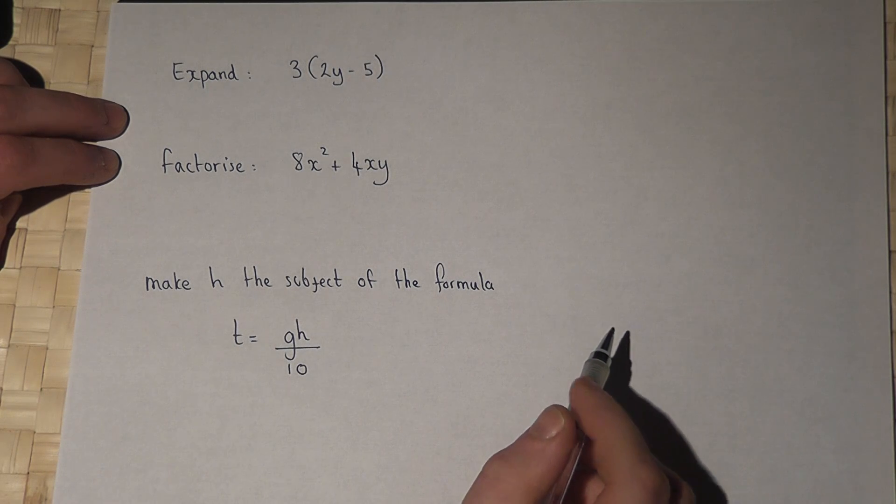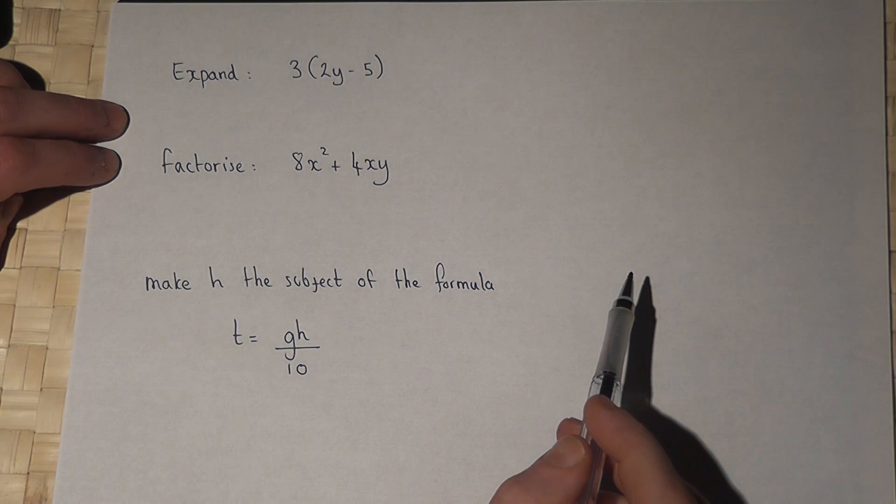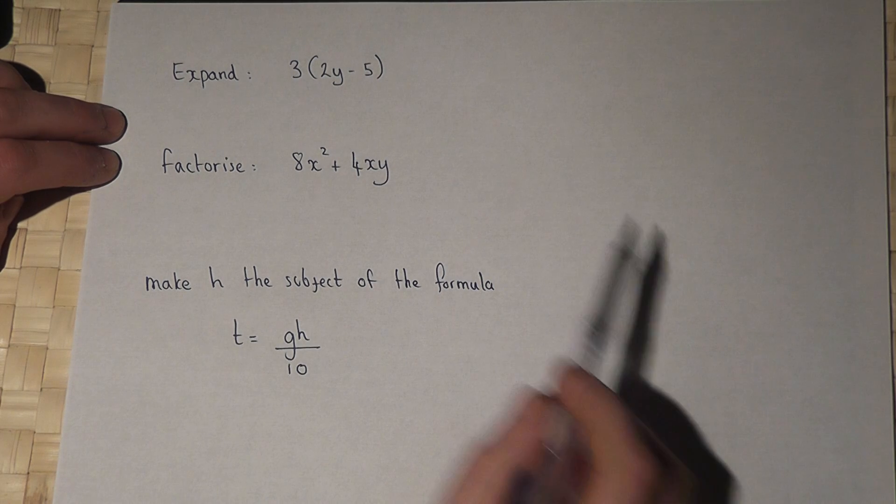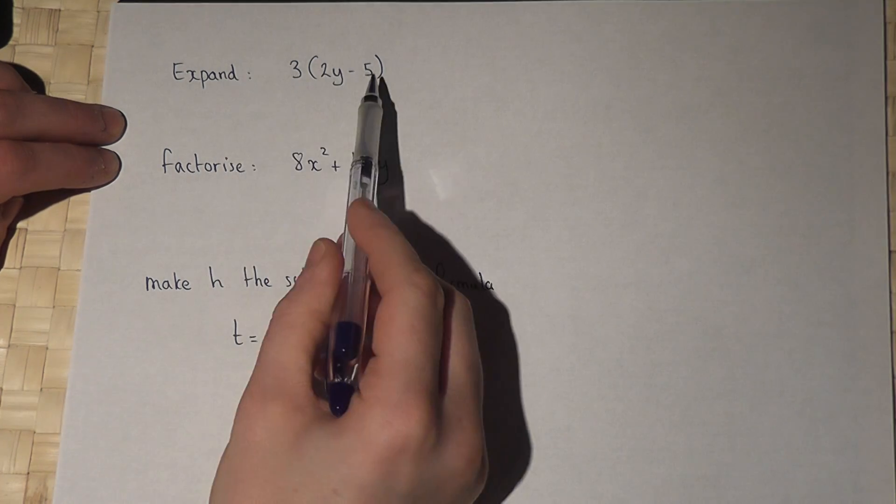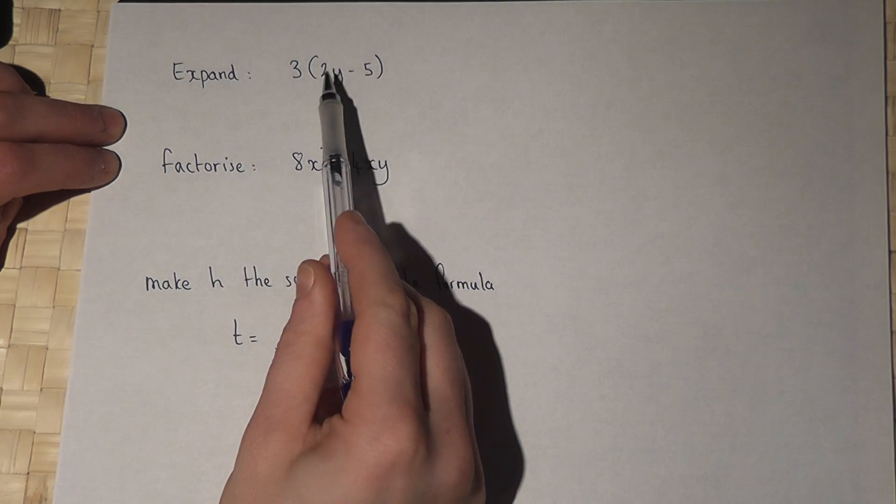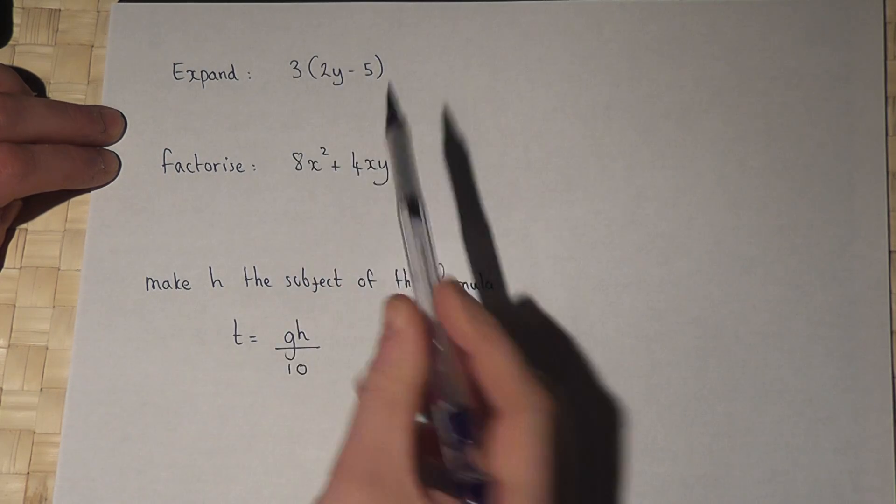This video looks at three routine algebraic calculations. When we're asked to expand, this means to times both terms in the bracket by the number outside.